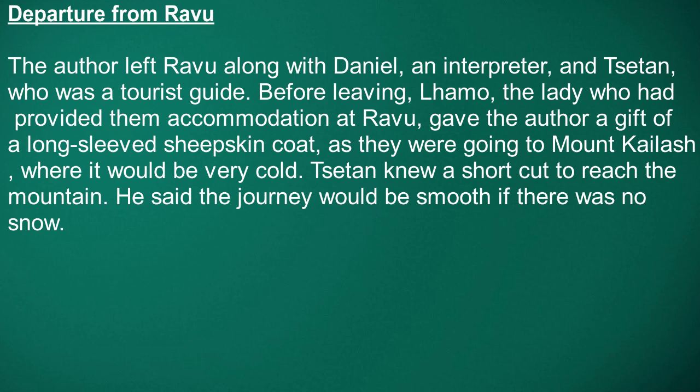Let us now look at the major subheadings under which the story is divided. The first is 'Departure from Rawu.' The author left Rawu along with Daniel, an interpreter, and Setan, the tourist guide. Before leaving, Lamo, the lady who had provided them accommodation at Rawu, gave the author a gift of a long-sleeved sheepskin coat, as they were going to Mount Kailash where it would be very cold. Setan knew a shortcut to reach the mountain and said the journey would be smooth if there was no snow.